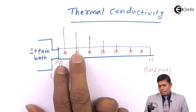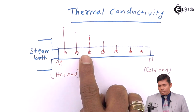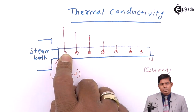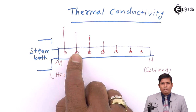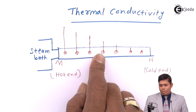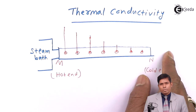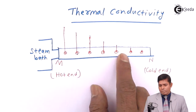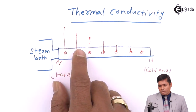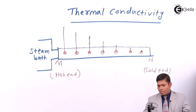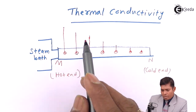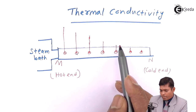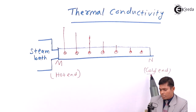By this process, as we move from one end to the other, the temperature keeps on decreasing. Initially the first molecule receives more heat, and the same amount will not reach the second molecule. As we move farther away, the amount of heat received by each molecule also decreases, so the temperature rise also decreases — giving a fall of temperature along the length of the rod.